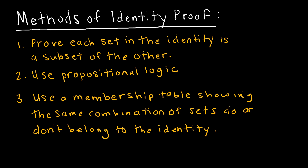In this video we want to talk about how to prove set identities. We are going to look at just one of the identities and prove it in three different ways. Any of the remaining identities you can certainly prove on your own. There are essentially three ways to prove set identities. One is to prove each set in the identity is a subset of the other — if A equals B, we show A is a subset of B and B is a subset of A.